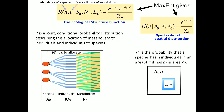How does the theory work? There are two functions at the core of the theory. The first is R(N, E), called the ecological structure function — a joint conditional probability distribution describing the allocation of metabolism to individuals and individuals to species. Pictorially, the total metabolism E₀ is a state variable, N₀ is the total number of individuals, and S₀ is the number of species. We use MaxEnt to derive its form. Interestingly, the word 'meet' means to allocate, so it's an appropriate acronym.